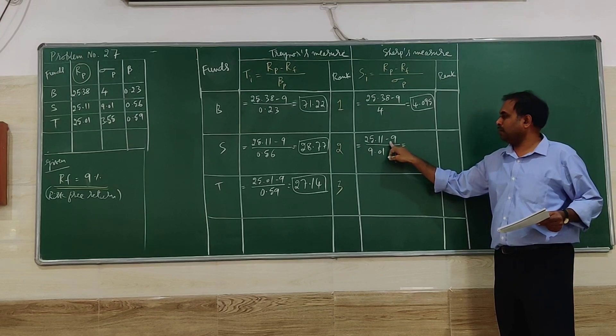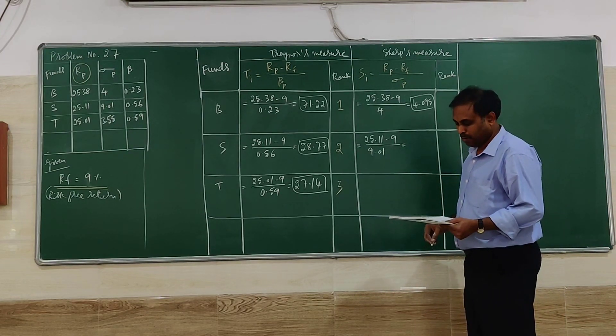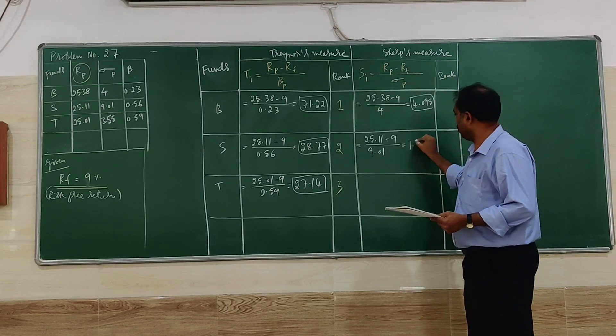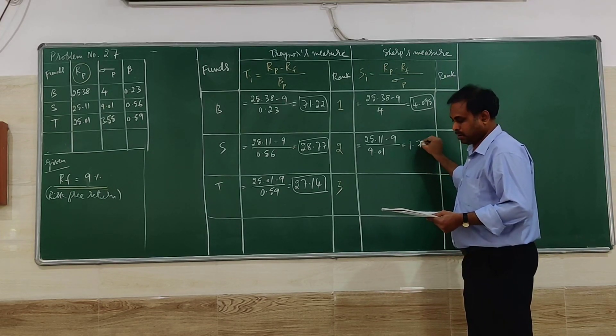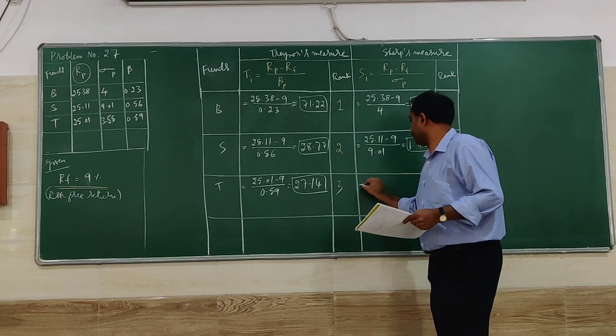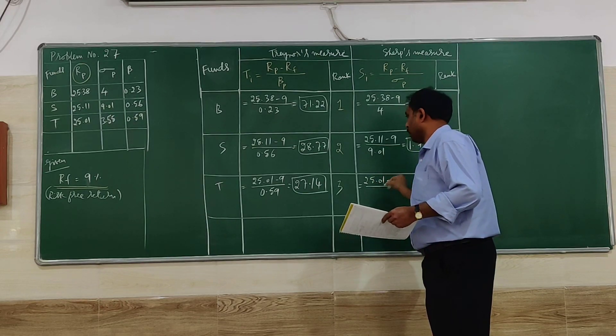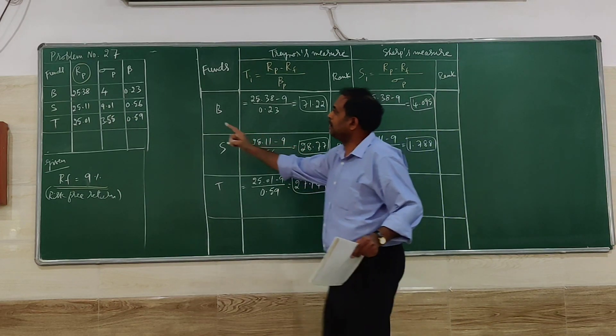Then for the second fund, 25.11 minus 9 divided by standard deviation 9.01 will give 1.788.